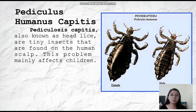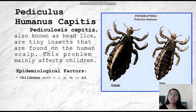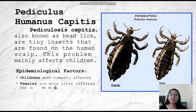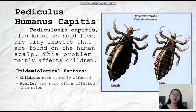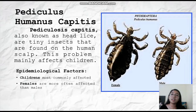Its average lifespan is 30 days. The epidemiological factors are: 1) children are most commonly affected; 2) females are more often affected than males, because females tend to have long hair. Children are more affected because of physical contact with other children who are infected with this parasitic infection.